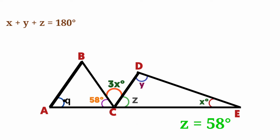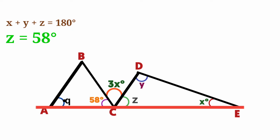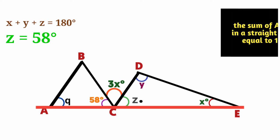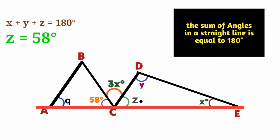We have one of the variables, we are left with one. Line ACE here is a straight line, so this angle, this angle, and this one must be equal to 180 degrees if you add them up. From the equation, 58 degrees plus 3x plus 58 degrees equals 180 degrees.